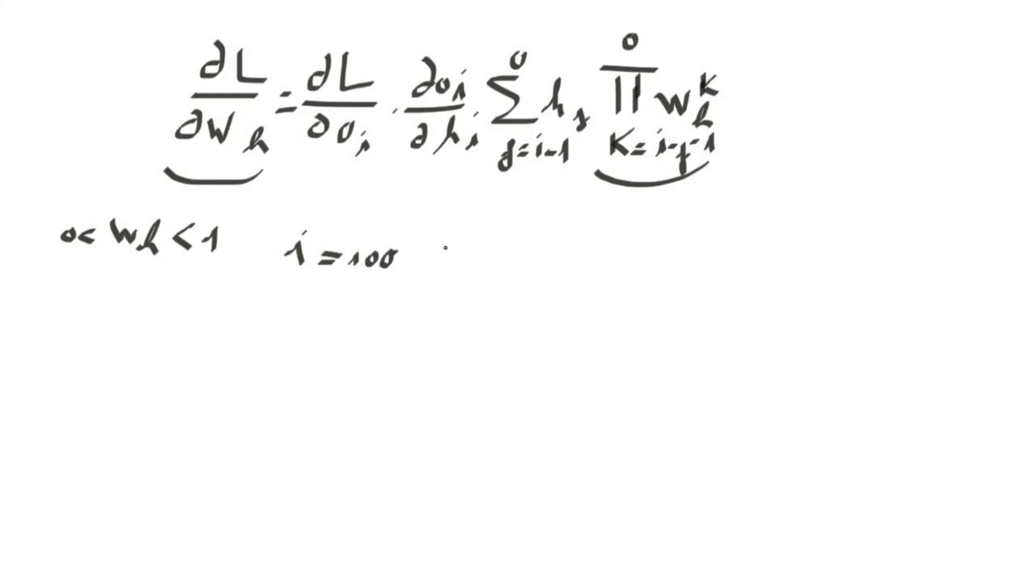So basically when we try to compute the gradients, we have to raise at some point wh to the power of 100. And what happens to the terms in wh when we raise to this power and their values are between 0 and 1? Then all the values in wh will tend to 0. This means that for a later step in our sequence, when we run the backpropagation algorithm, we get no training signal, which is known as the vanishing gradient problem.